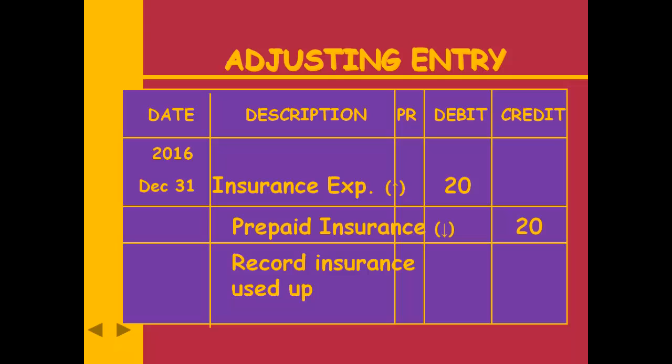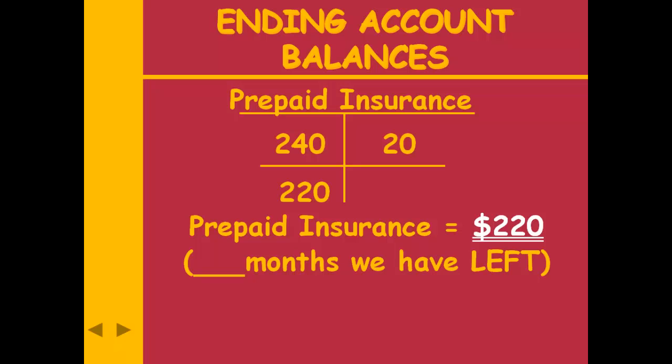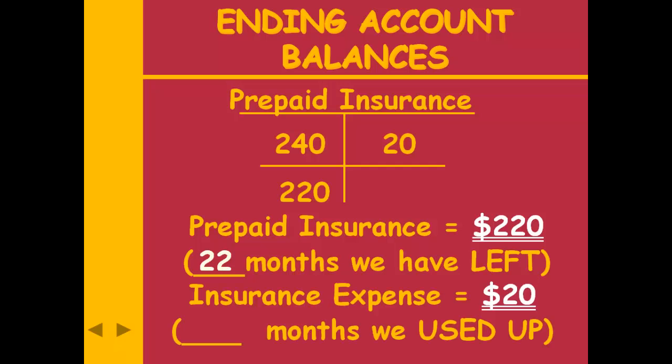In a homework problem they might say '$20 of insurance has expired' — expired means used up. Unexpired means what's left, what's not used up. Looking at the T-account for prepaid insurance: original entry was a debit of $240; the adjusting entry credited it for $20, leaving a debit balance of $220. At $10 per month, $220 represents 22 months of insurance remaining.